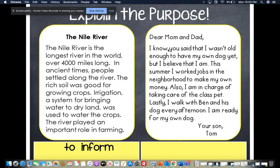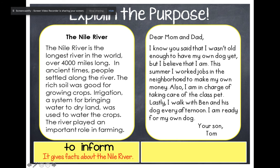'Dear Mom and Dad, I know you said that I wasn't old enough to have my own dog yet, but I believe that I am. This summer, I worked jobs in the neighborhood to make my own money. Also, I'm in charge of taking care of the class pet. Lastly, I walked with Ben and his dog every afternoon. I am ready for my own dog. Your son, Tom.' This is a letter, and letters usually fall under persuade. Tom is trying to convince his mom and dad to let him get a dog, so this one is to persuade — he is trying to change someone's mind.